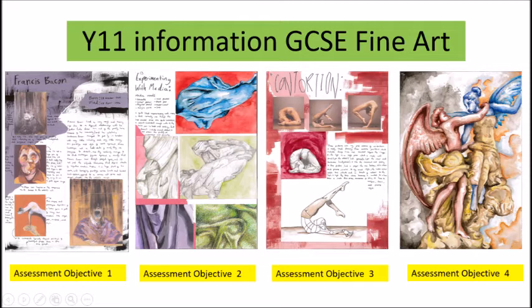After week 4, myself and Miss Matthews will review your child's progress and give feedback to your child on their work so far. They will then have the remaining 4 weeks to act upon the feedback to ensure that they have high quality evidence for all the assessment objectives. After the 8 weeks are done, we will formally mark their work against the 4 assessment objectives, looking for the strongest pieces of evidence.